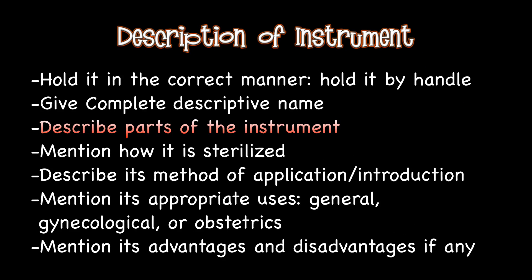When describing the instrument, it should be held in the correct manner — that is, in the way it is held when using it during the operation or procedure. Hold it by the handle if there is one. When identifying the instrument, give its complete descriptive name. Although all instruments are invented by someone, the name of the person who invented it should be mentioned only for a few commonly used instruments. Then describe the parts of the instrument with special emphasis on its peculiar features, if any.